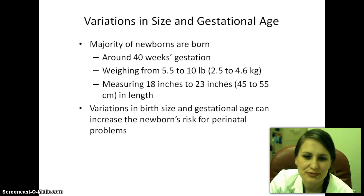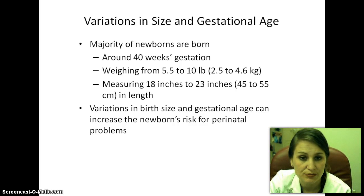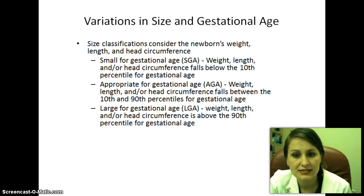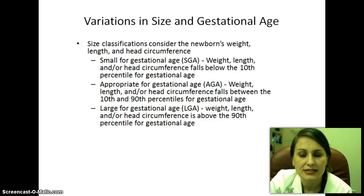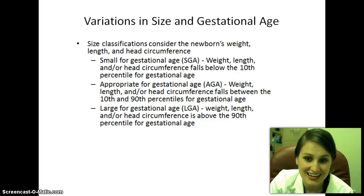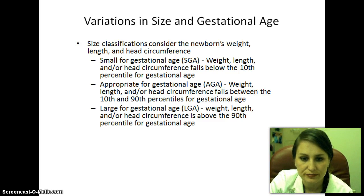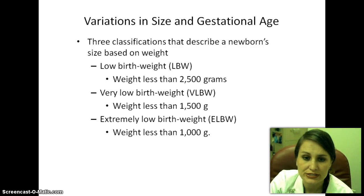A majority of newborns are born around 40 weeks gestation, weighing an average of 5 to 10 pounds and measuring 18 to 23 inches in length. Variations in birth size and gestational age can increase the newborn's risk for perinatal problems. We classify size as SGA — small for gestational age — where weight, length, and head circumference fall below the 10th percentile. Appropriate for gestational age falls between the 10th and 90th percentile, and large for gestational age is above the 90th percentile.